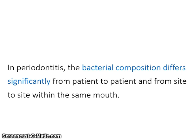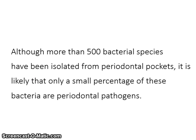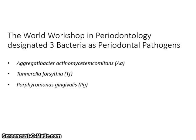In periodontitis, the bacterial composition differs significantly from patient to patient and from site to site within the same mouth. Although more than 500 bacterial species have been isolated from periodontal pockets, it is likely that only a small percentage of these bacteria are periodontal pathogens. The World Workshop in Periodontology designated three bacteria as periodontal pathogens, referred to as AA, TF, and PG.